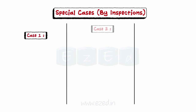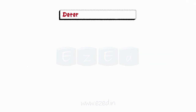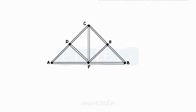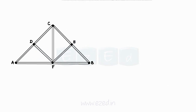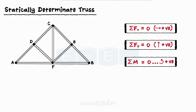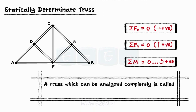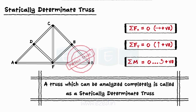Thus, we have discussed about the three main cases important to analyze trusses. Now, we will learn about determinancy of trusses. A truss in which we can find the forces in all the members by applying the three conditions of equilibrium is known as a statically determinate truss, also called a perfect truss. All the trusses that we have solved till now were statically determinate.